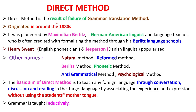Direct method is the result of the failure of the grammar translation method, because grammar translation method was totally focused on and totally depending on the mother tongue. Finally it failed and they started focusing on direct method. This method originated around the 1880s, pioneered by Maximilian Berlitz, a German-American linguist and language teacher who is often credited with formalizing the method through his Berlitz language schools.